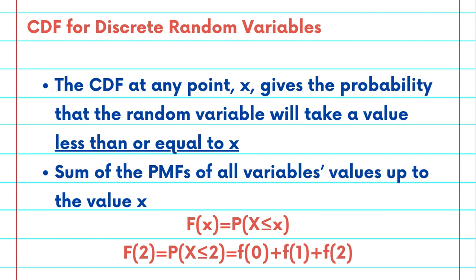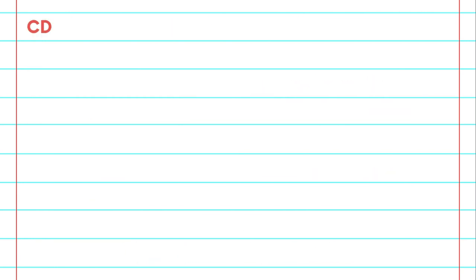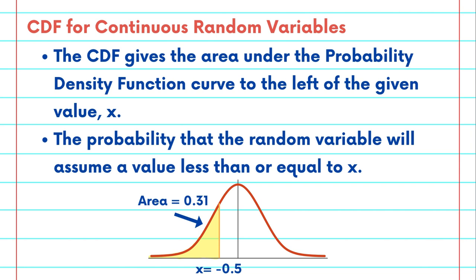For continuous variables, the CDF gives the area under the PDF curve to the left of a given value, representing the probability that the random variable would assume a value less than or equal to that value.